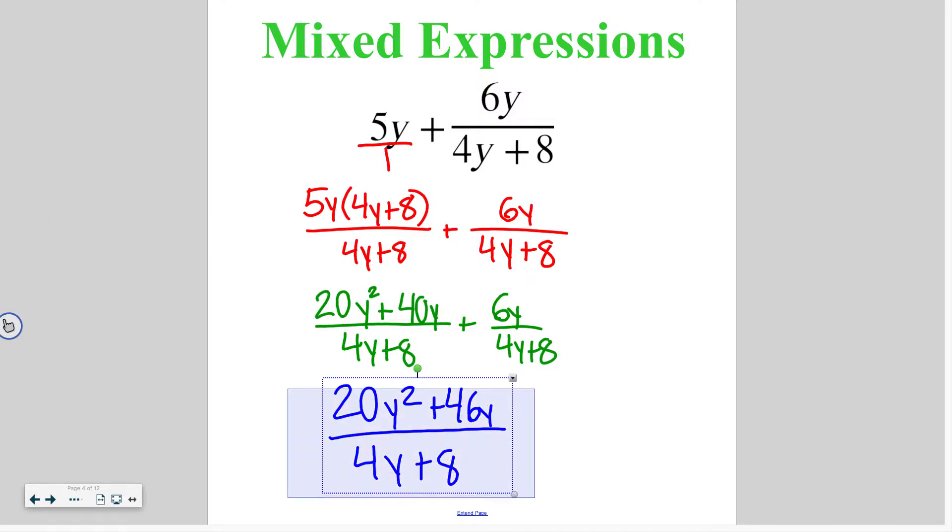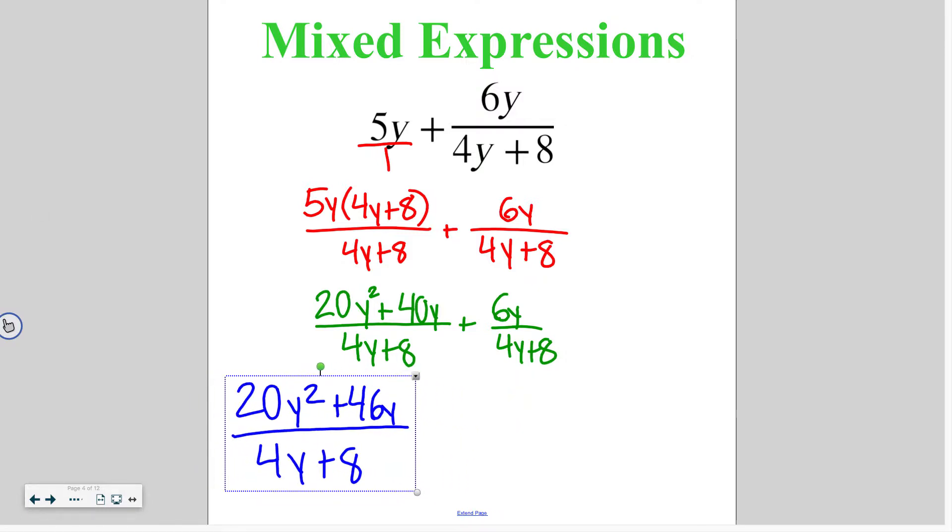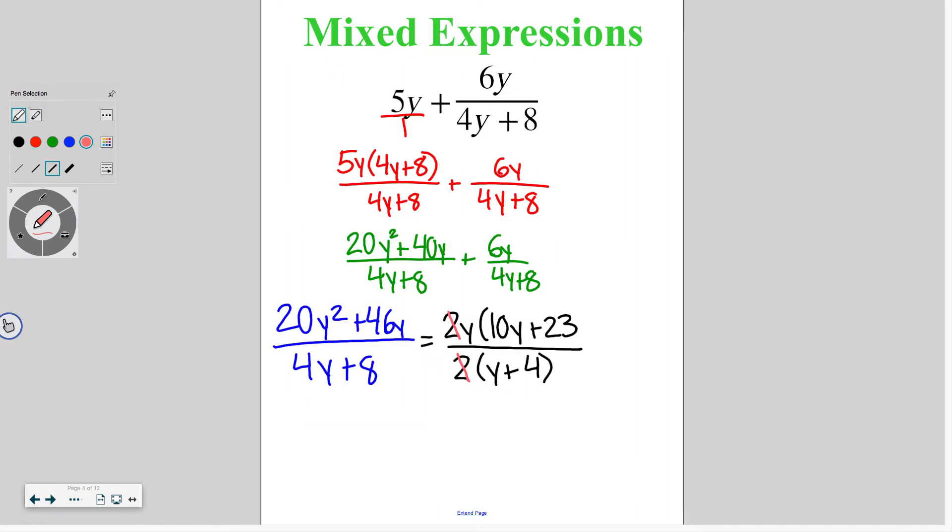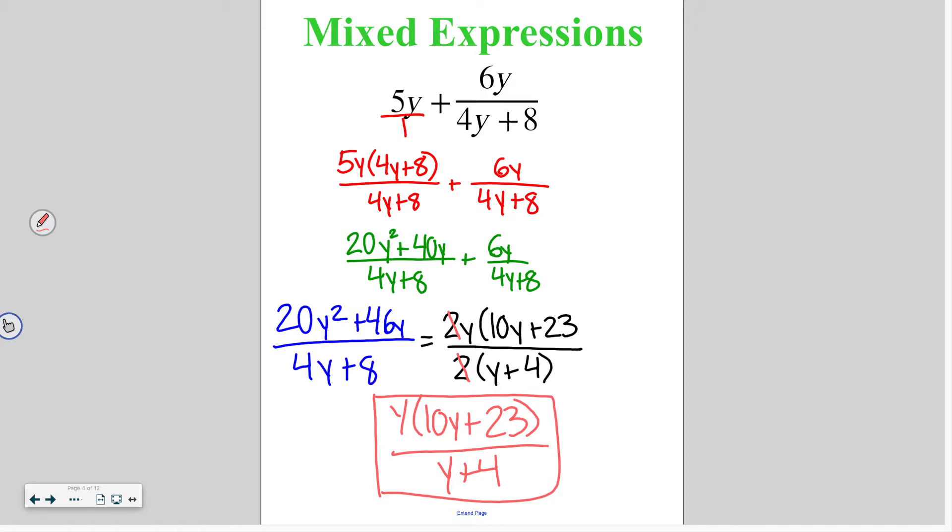And then per usual we're going to want to check if there are any common factors. Up top, both of them can be factored by 2y, so I'm going to take out a 2 and a y and I'm left with 10y plus 23. And then on the bottom I can also take out a 2, so I'm going to take out a 2 and I'm left with y plus 4 after I divide everything by 2. Then in order to do that simplifying we cross out any matching factors. So in this case the 2. And I am left with y times 10y plus 23 over y plus 4. So that's as simplified as I can get for this particular mixed expression.